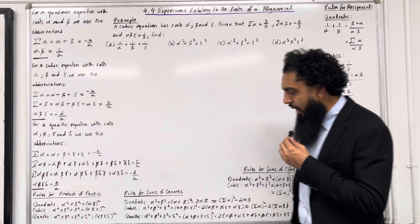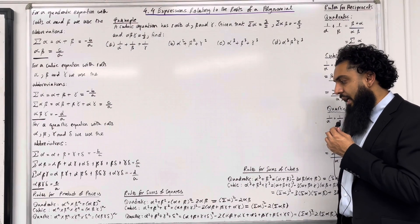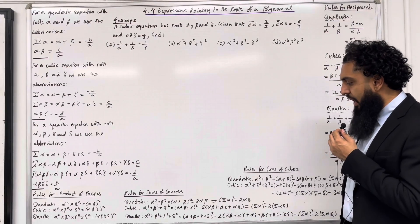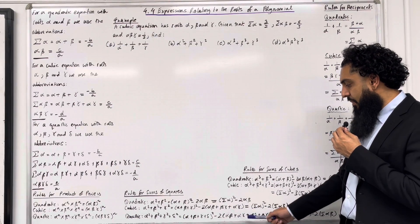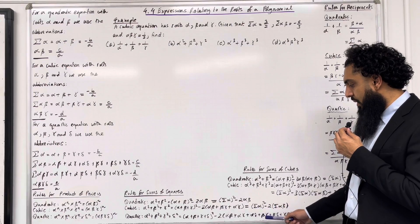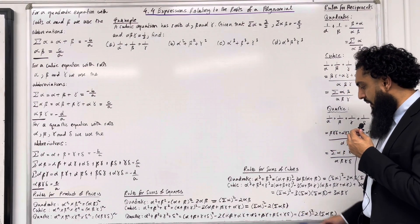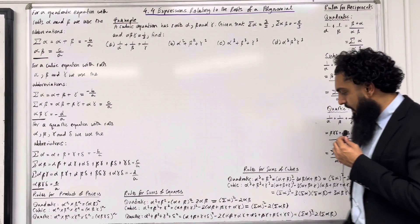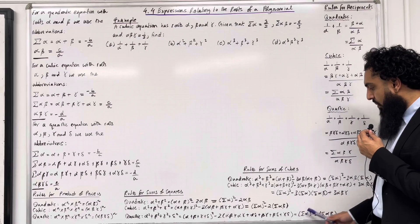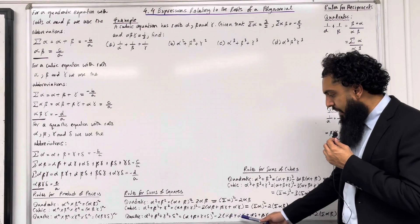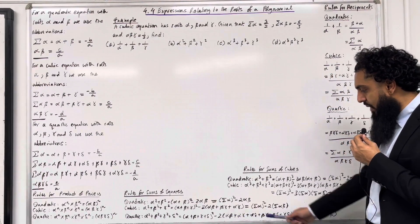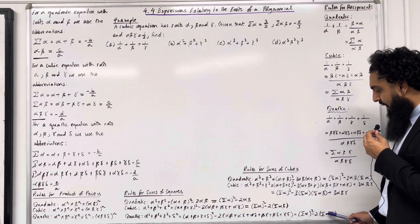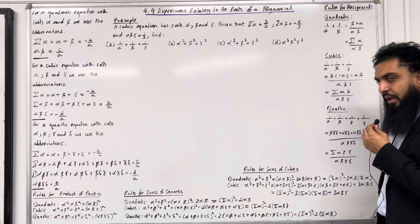Finally, for a quartic, alpha squared plus beta squared plus gamma squared plus delta squared is equal to (alpha plus beta plus gamma plus delta) squared minus two lots of (alpha beta plus alpha gamma plus alpha delta plus beta gamma plus beta delta plus gamma delta), which is equal to (sum of alpha) squared minus two lots of sum of alpha beta.